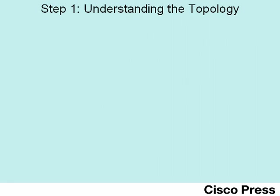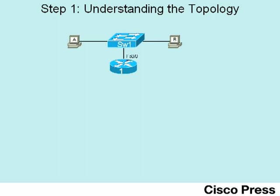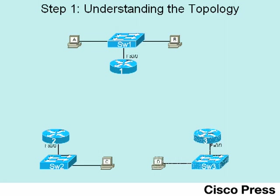Let's begin scenario step one by taking a look at the topology used in the internetwork shown in this video. We've got a main site with a router, a switch, and a couple of hosts. Then we've got the first remote site with router two, switch two, and a single host C, and yet another remote site with router three, switch three, and a remote host D. To connect these two remote sites to the central site, we need some WAN links — a point-to-point link between router one and router two, as well as another point-to-point link between router one and router three.